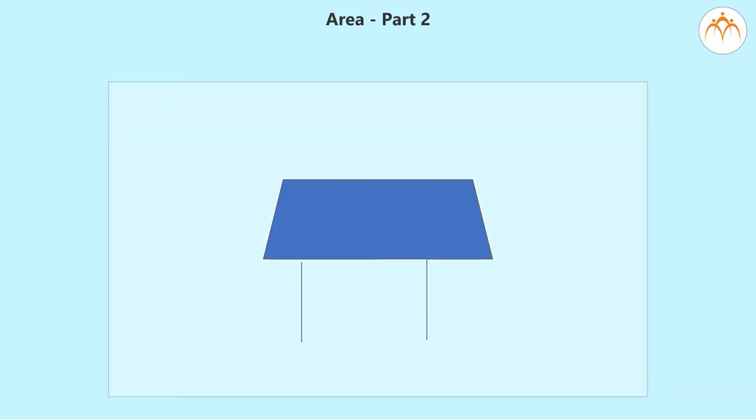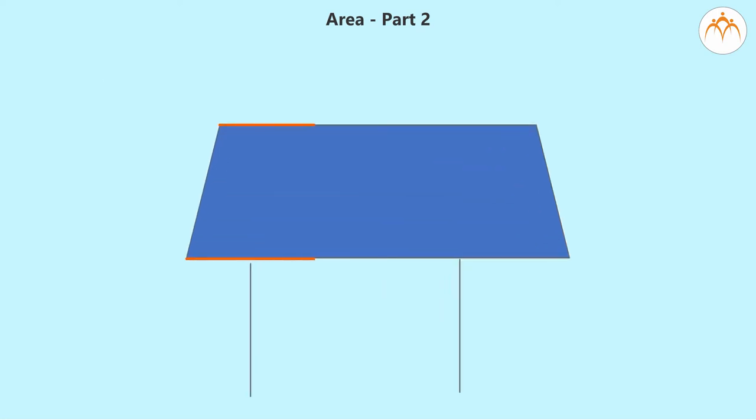If we look at the roof, we see that the two sides of the quadrilateral are parallel and the other two sides are slanted.